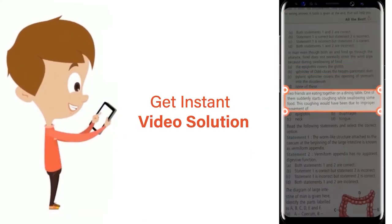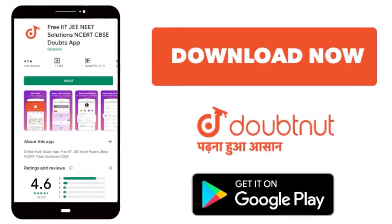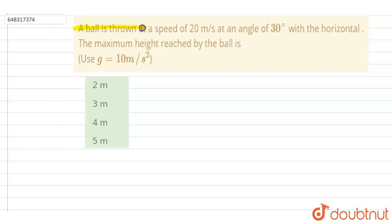Hello everyone. A ball is thrown at a speed of 20 meter per second at an angle 30 degrees with horizontal. The maximum height reached by the ball is...